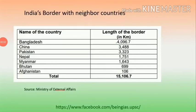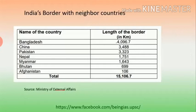Name any two neighboring countries of India lying in the east — Myanmar and Bangladesh. Name any two southern neighbors of India across the sea — Sri Lanka and Maldives. Name two countries with which India shares its northwest border — Pakistan and Afghanistan. Name two countries with which India shares its north border — China and Nepal. The countries with which India shares its land boundaries are Afghanistan, Pakistan, China, Nepal, Bhutan, Myanmar and Bangladesh.